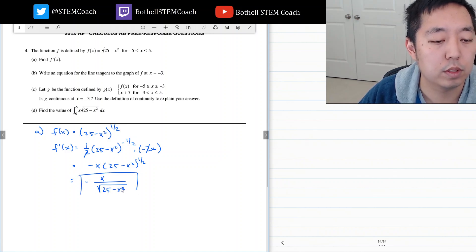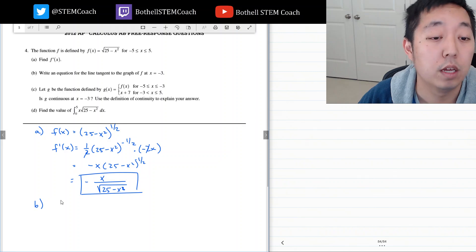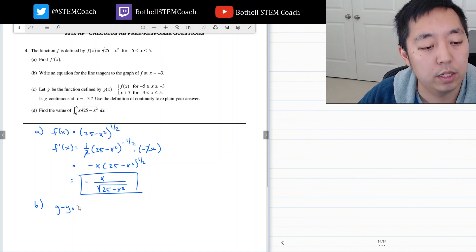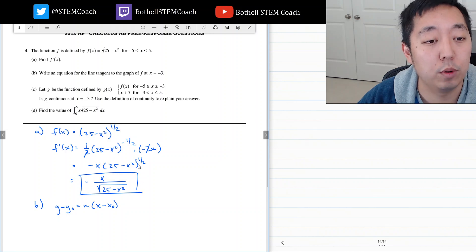Okay, so that's A. Write an equation for the line tangent to the graph at x equals negative 3. To draw a tangent line to a graph I need to use slope point form. So it's y minus y naught equals m times x minus x naught. Now the point is at negative 3 so let's find the point first. x naught equals negative 3.